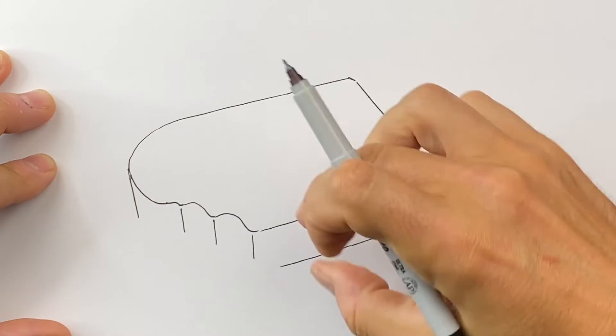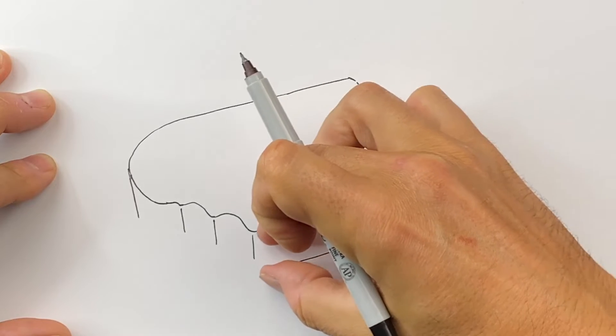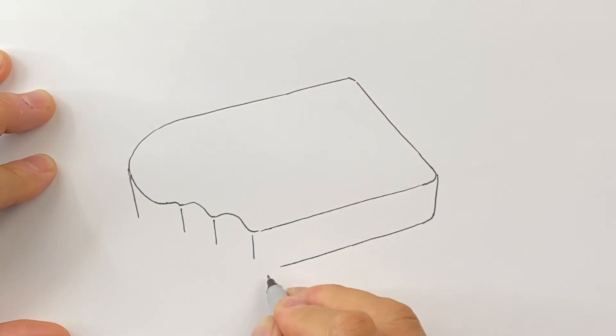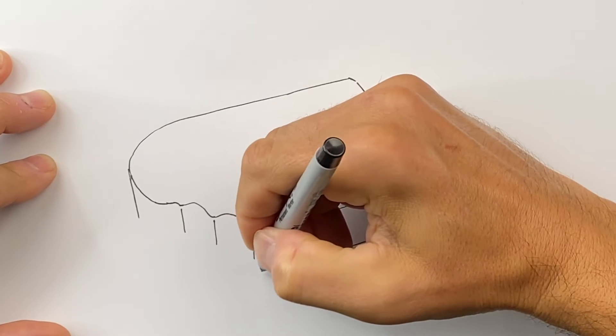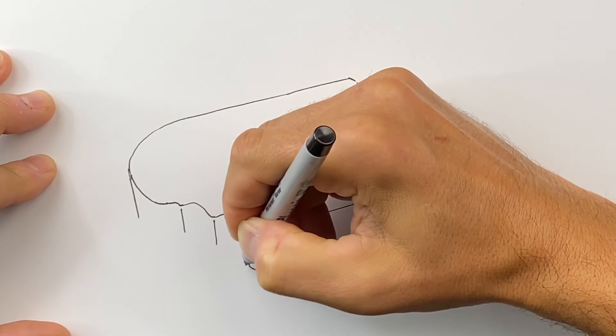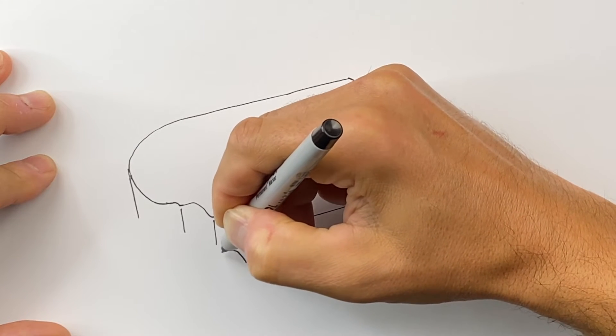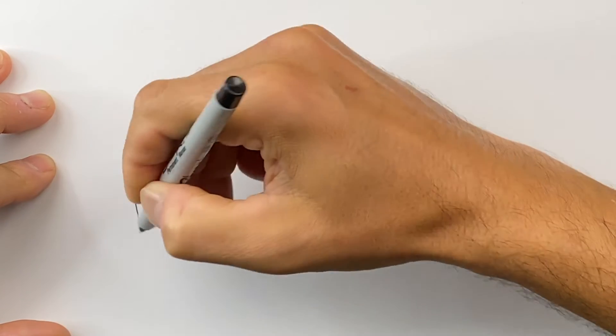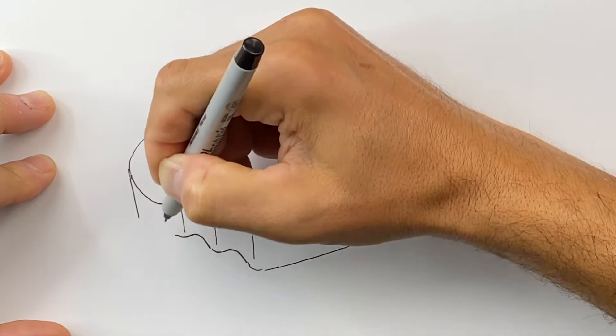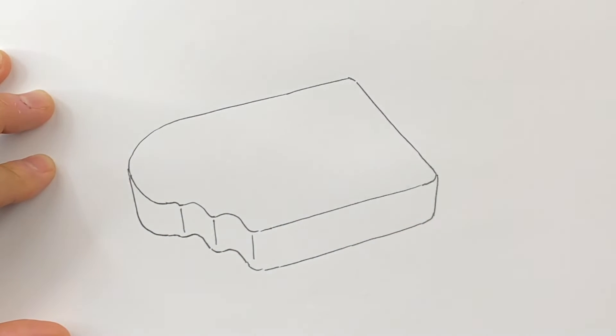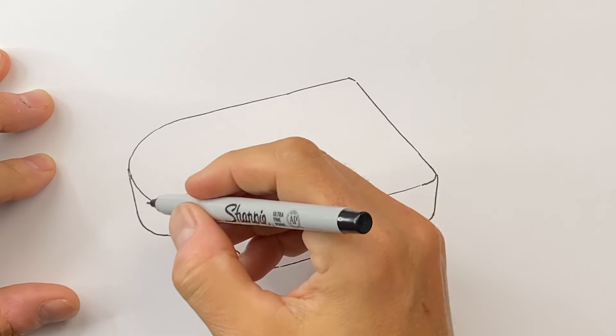Then we want to try to maintain this same thickness all the way through. So as we get over here we will round this, and then we're gonna come up and we're gonna round that bite, and then this one, and then this one's gonna kind of come and round like that. So then we have a big chunk out of our ice cream bar here.